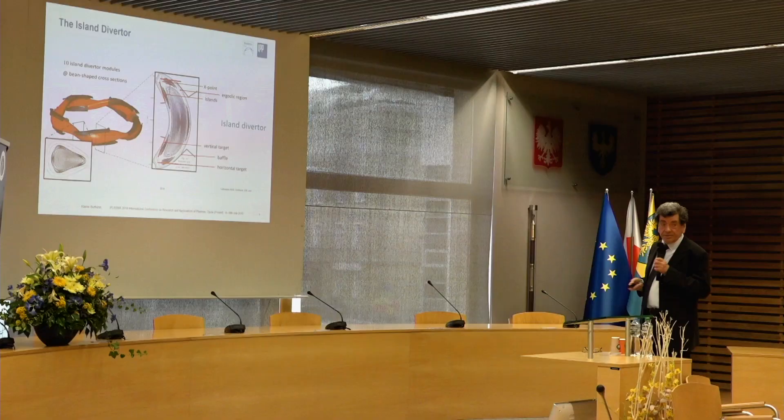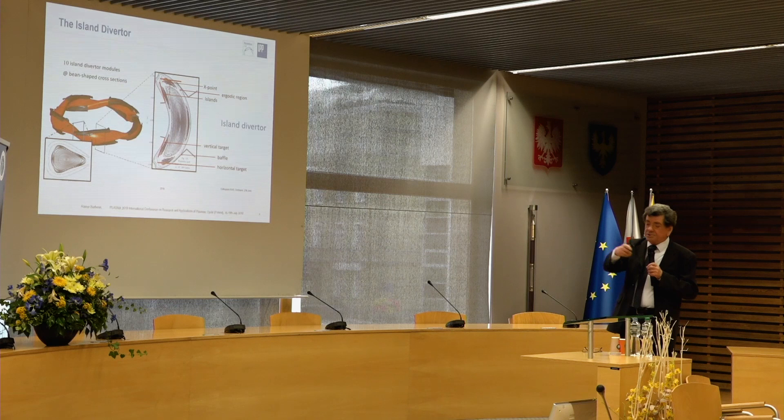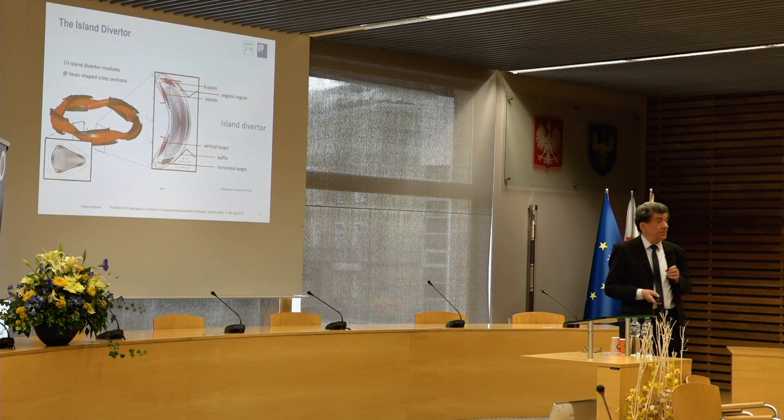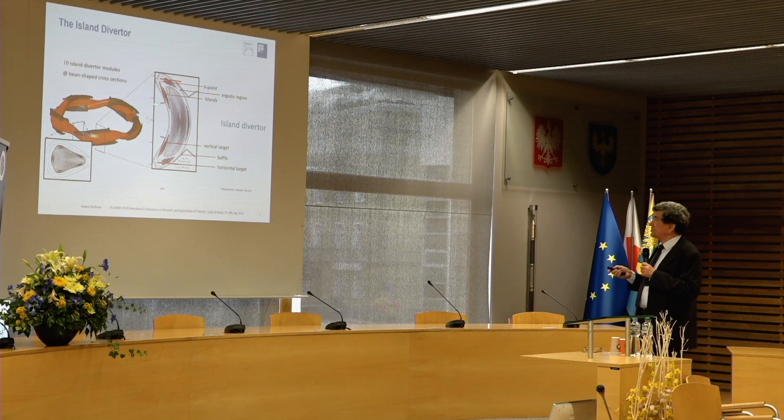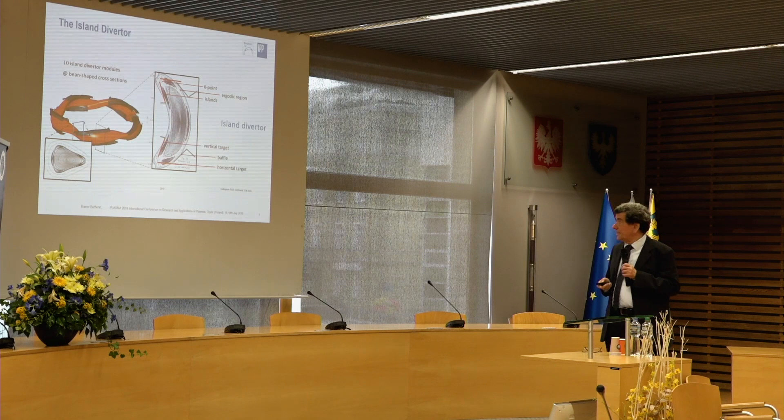If particles leave the plasma, they come into the region between the islands, to the last closed flux surface. They are then transported by the islands to a place where we cut these islands with so-called divertor plates — we make a divertor in this way. We call this the natural island divertor. Behind the divertor we have a pumping system, and this is how we control our particles.